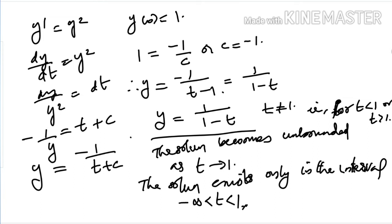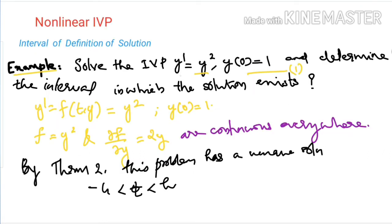We started with the equation y' = y², a non-linear equation, with initial condition y(0) = 1. Applying the theorem, we check the hypothesis: f = y² and ∂f/∂y = 2y. Both functions are continuous everywhere. Applying the non-linear IVP existence and uniqueness theorem, we conclude there is a unique solution.